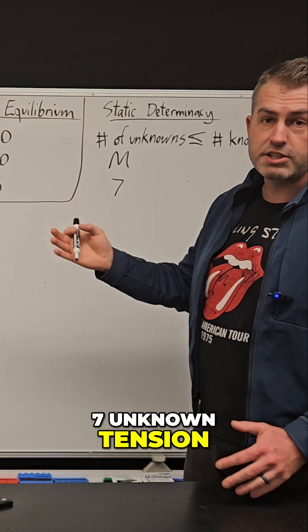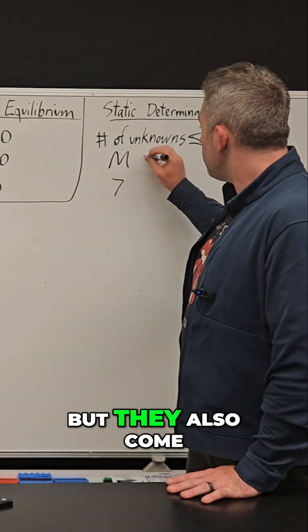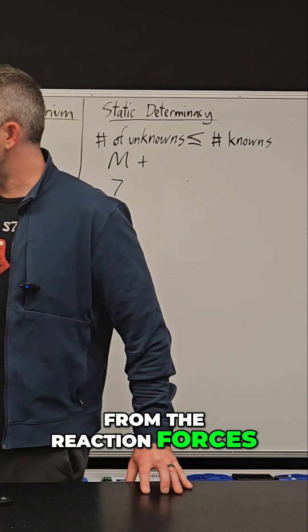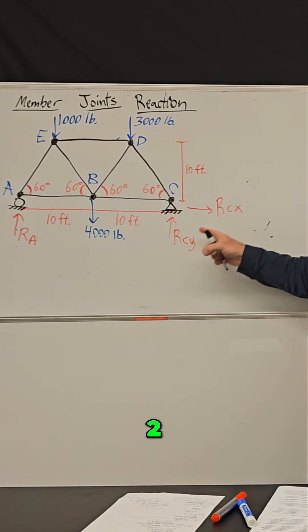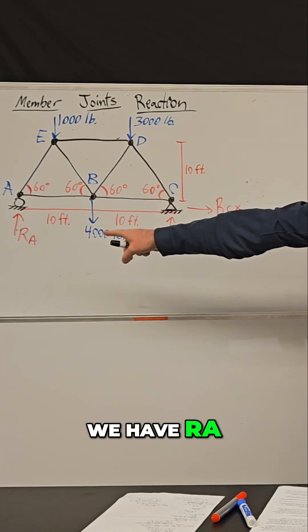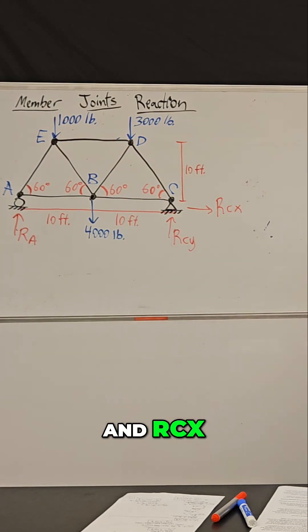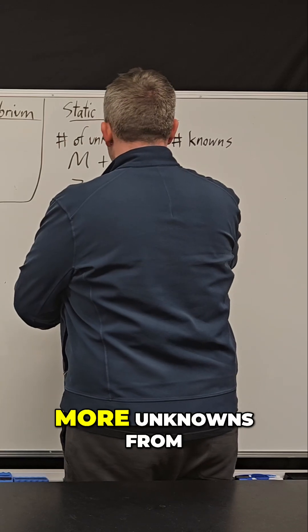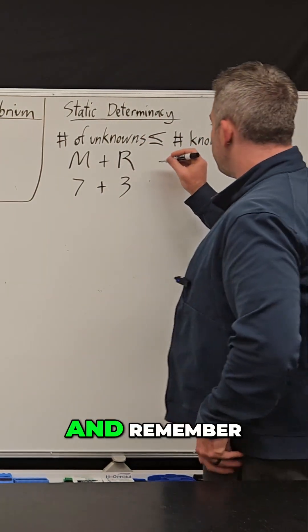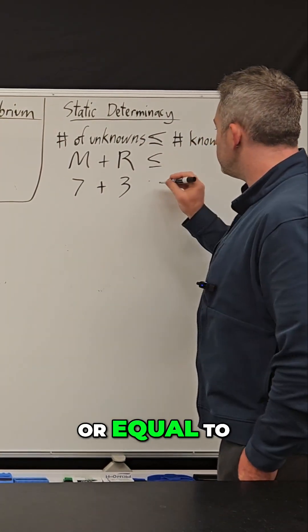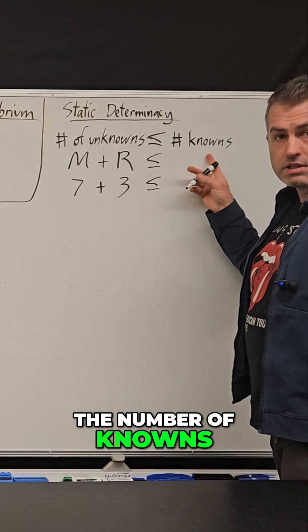But they also come from the reaction forces. We have how many unknown reactions? One, two, three. Remember, we have Ra, Rcy, and Rcx. So we've got three more unknowns from our three unknown reaction forces. And remember, this has to be less than or equal to the number of knowns.